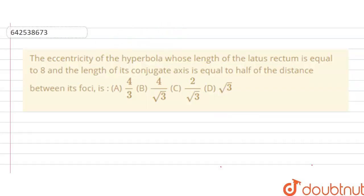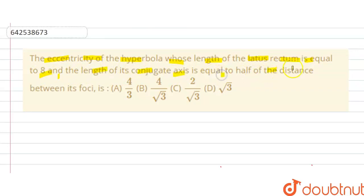Hello students, today our question is: find the eccentricity of the hyperbola whose length of the latus rectum is equal to 8 and the length of its conjugate axis is equal to half of the distance between its foci. We have 4 options given and we have to find which option is correct.